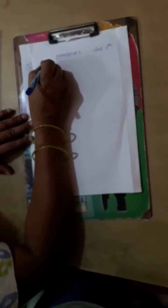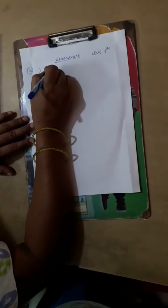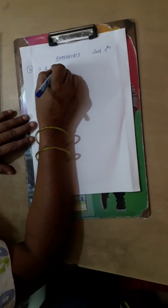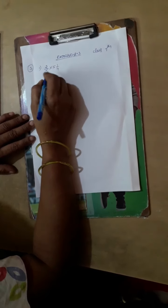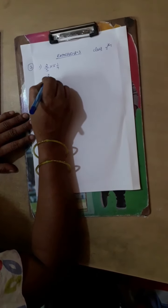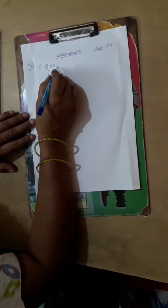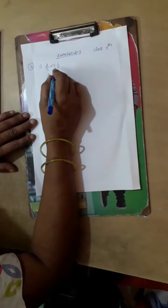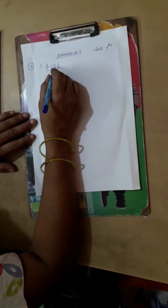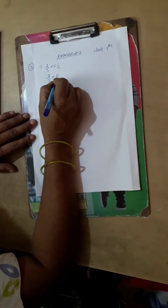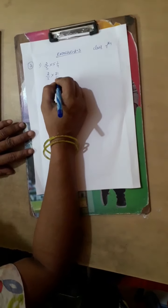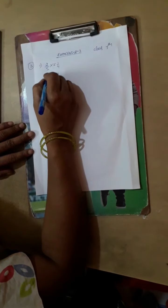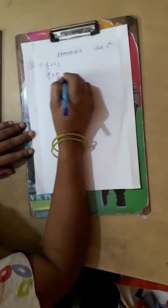Problem number 1: 2 by 5 into 5 1 by 4. How to multiply? So first, let us write 2 by 5 as it is, then convert this mixed fraction into improper fraction. 5 times 4 is 20, 20 plus 1 is 21 by 4. So let us multiply. First cancel each other: 2, 1 is 2.